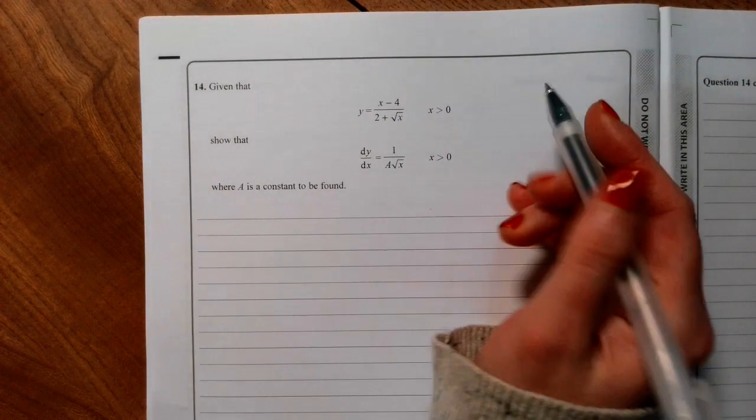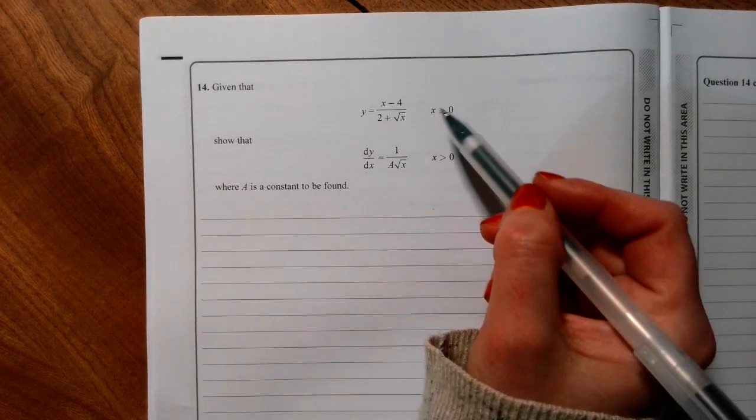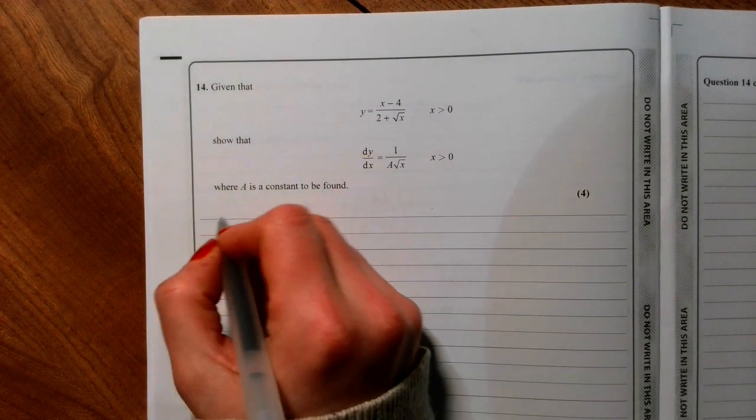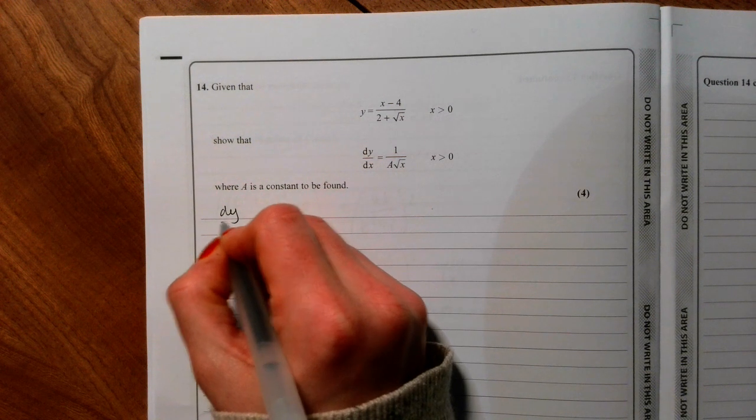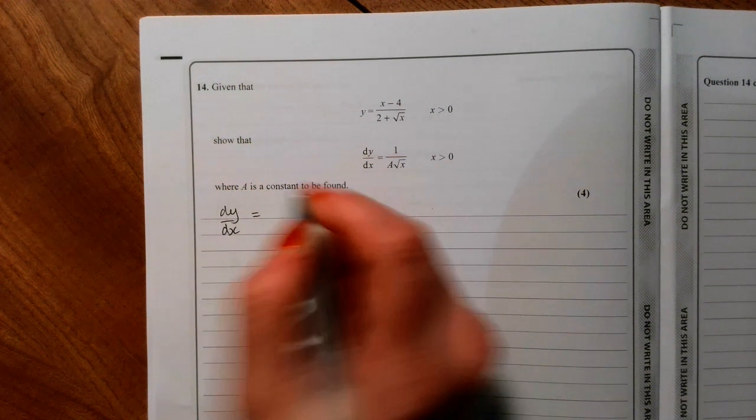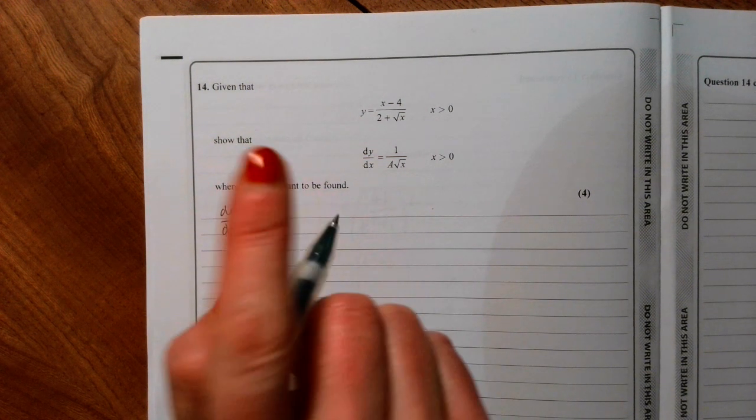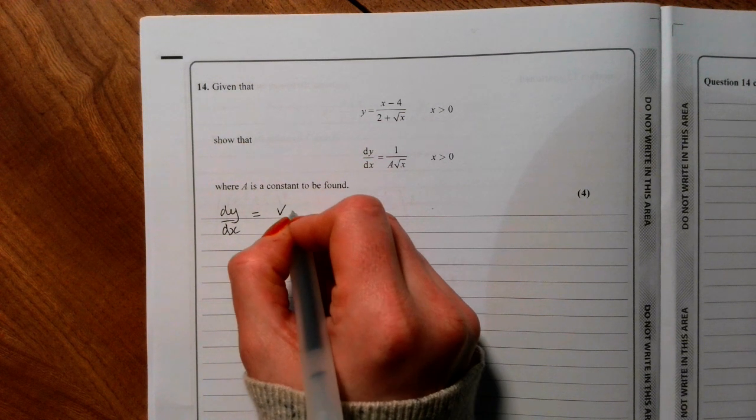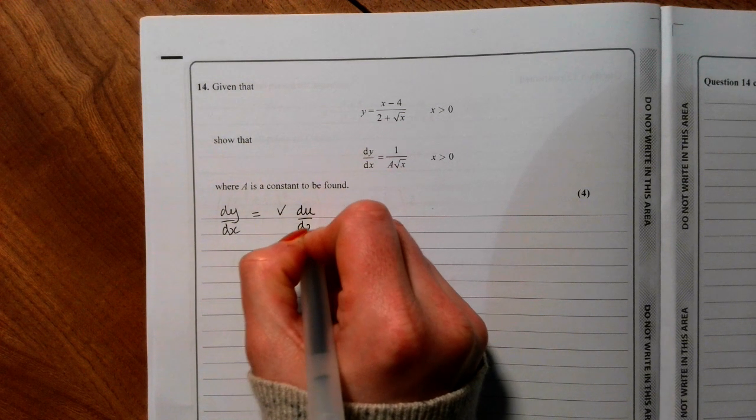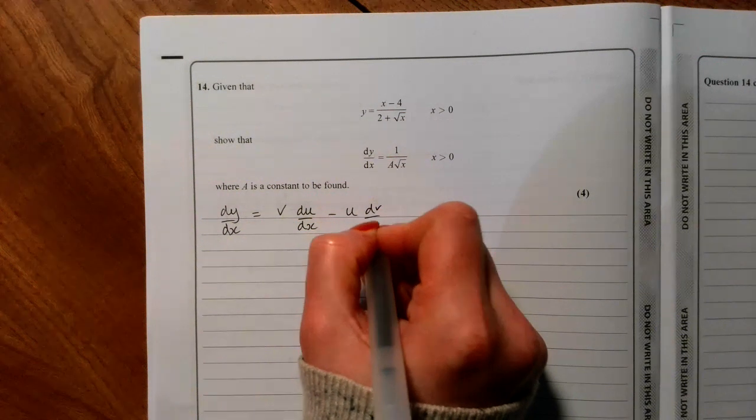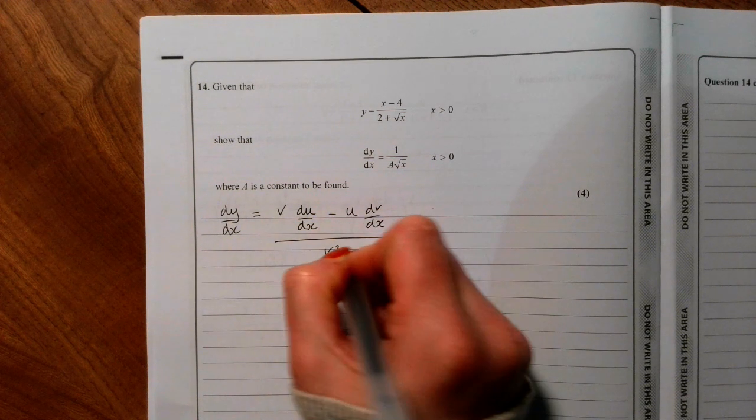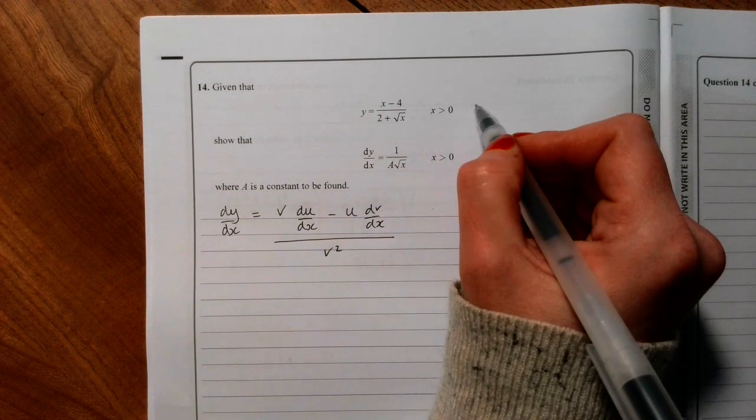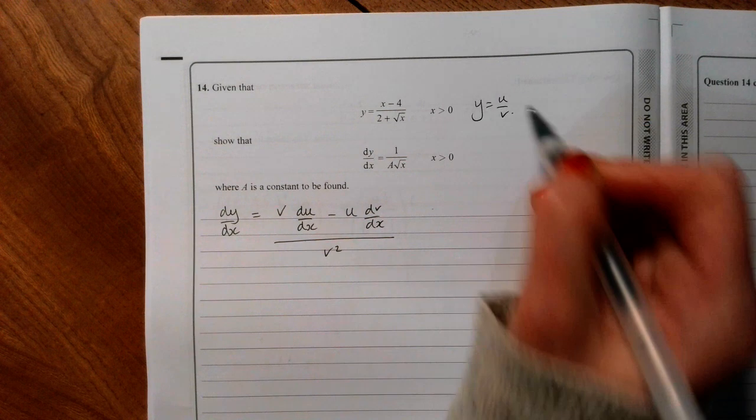Question 14 is a differentiation question and it's a quotient, so we're going to need the quotient rule. The quotient rule is in the formula book in the form with v dashes and things, but some people prefer to have it in this form: v du by dx minus u dv by dx all over v squared. That's when y equals u over v.